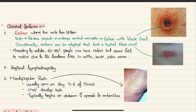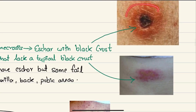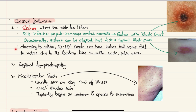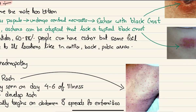Occasionally, eschars may be atypical and lack the typical black crust. As shown in these pictures, a typical eschar has a black crust while an atypical one does not. Research suggests 60 to 88% of patients have an eschar, but many fail to notice it due to its location in less visible areas such as the axilla, back, or genital and pubic regions.